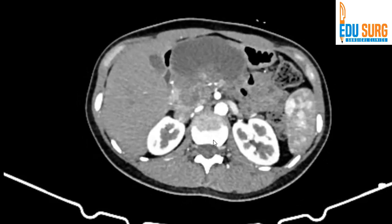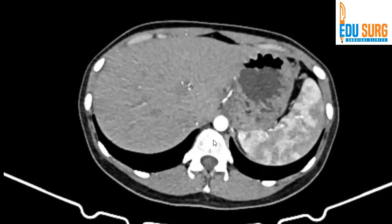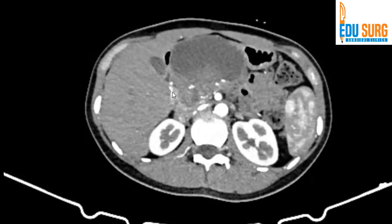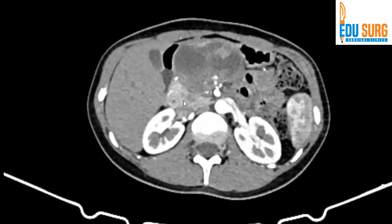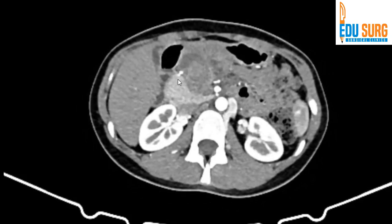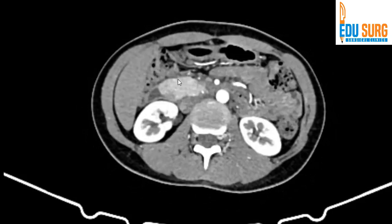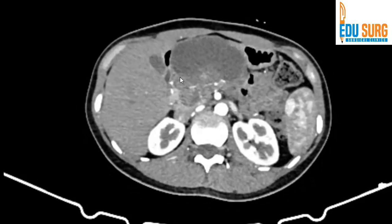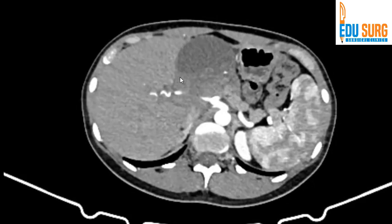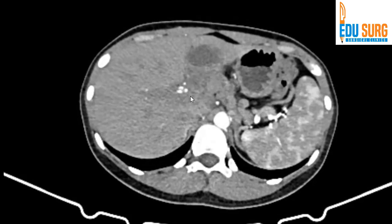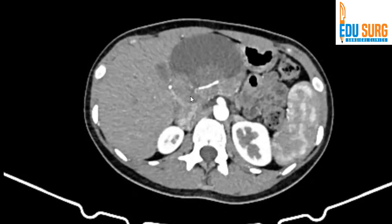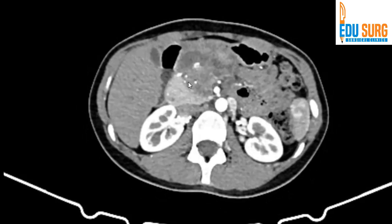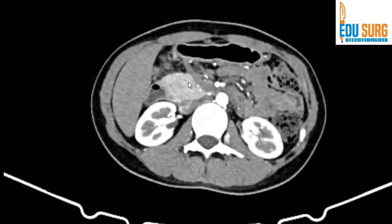Another important structure you have to see here is the gastroduodenal artery. This is the gastroduodenal artery, and you can see that it is skirting and entering the tumor. You can trace it nicely, coming into the common hepatic. The gastroduodenal artery is important when we plan surgery for this patient because it is skirting at one edge of the tumor, so the gastroduodenal artery is going to get resected.